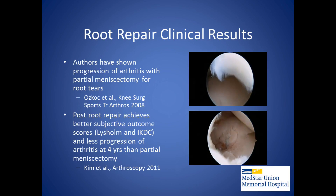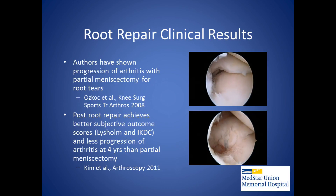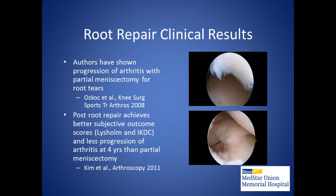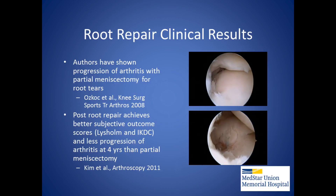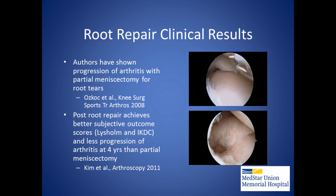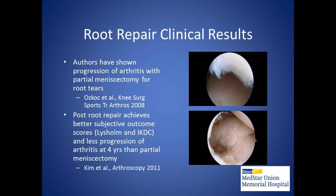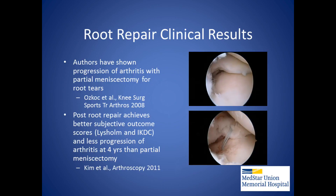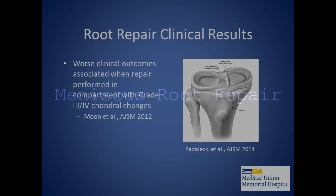Authors have shown progression of arthritis with partial meniscectomy in the treatment of root tears. Posterior root repair achieves better subjective outcome scores and less progression of arthritis at four years than partial meniscectomy. Worse clinical outcomes are associated with repairs performed in compartments with advanced level cartilage change.